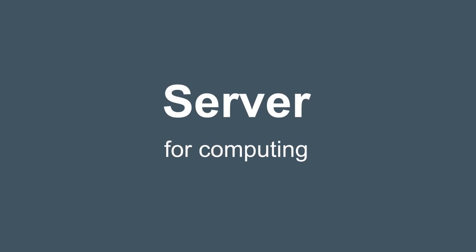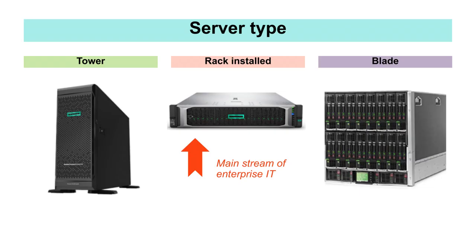First, it is a server for calculation purposes. If we look at servers externally, there are tower types, rack-mounted types, and blade types. The tower type can be placed on an office desk rather than mounted on a rack, and can be said to be used in small offices or home use rather than for corporate use. Next, it is a rack-type server that is mounted on a rack. Because the rack-type server is installed in a rack about 2U high, it is shaped like a thin plate, and this is the typical form of a corporate server.